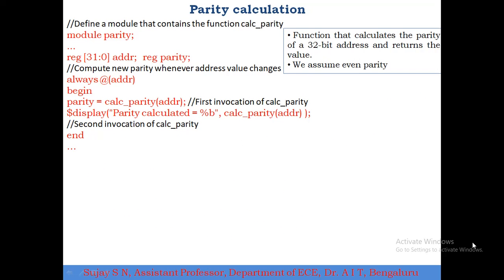Now let us take an example of parity calculation. Here we are going to write a Verilog code that calculates the parity of a 32-bit address and returns a value. We are going to write this Verilog code for parity calculation using a function that calculates the parity and returns the value to the main block or main design.